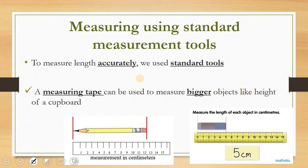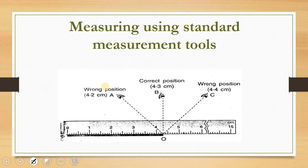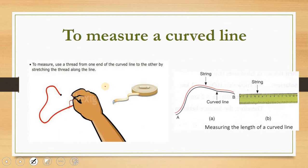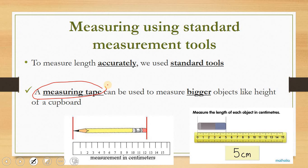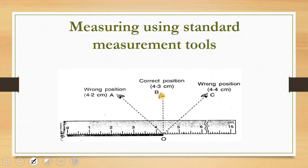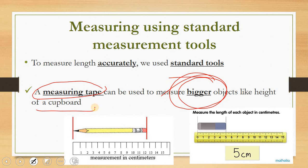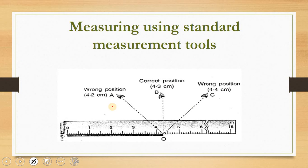Kalau if you have a big object, you use measuring tape. Bila kamu ada objek yang besar, kamu akan guna measuring tab. Kamu guna measuring tab untuk bigger objects. You use measuring tab ataupun pita pengukur for bigger objects, untuk objek yang besar. Contohnya height of cupboard — if you have almari, kamu guna measuring tab, pita pengukur.